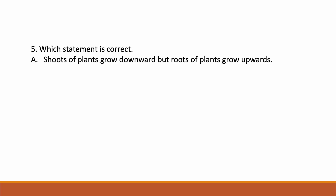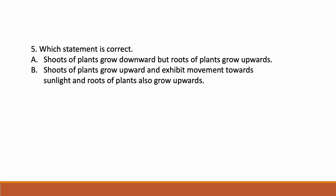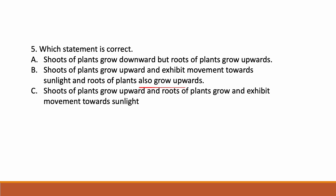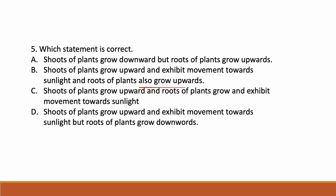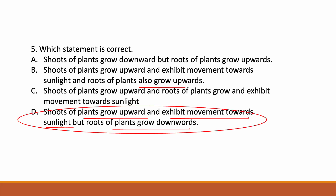Which statement is correct? Statement one: shoots of plants grow downward but roots grow upwards — this is incorrect. Shoots grow upward and roots grow downward. Option B: shoots grow upward and exhibit movement towards sunlight, and roots also grow upwards — incorrect, roots grow downwards. Option C: shoots of plants grow upward and roots grow downward and exhibit movement towards sunlight — this is the correct option.